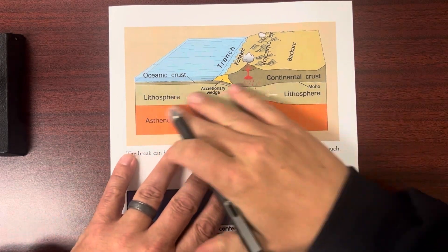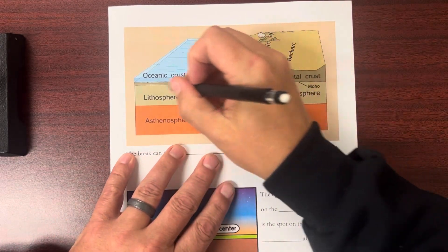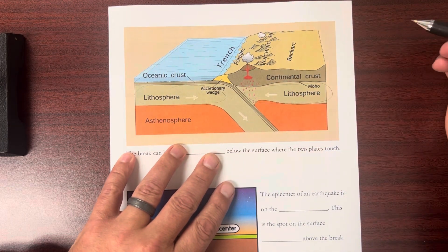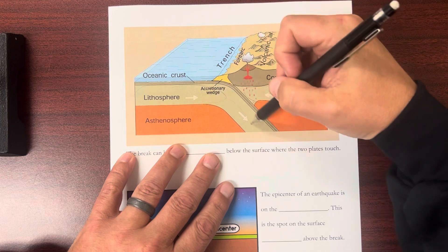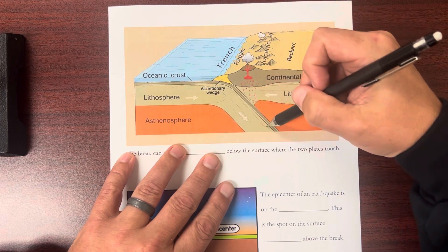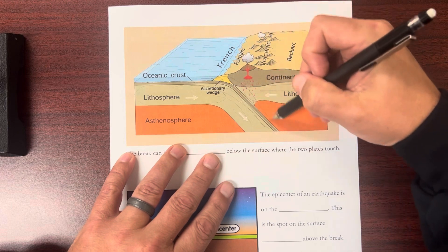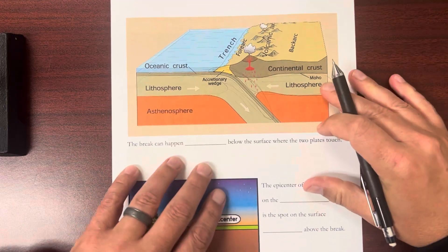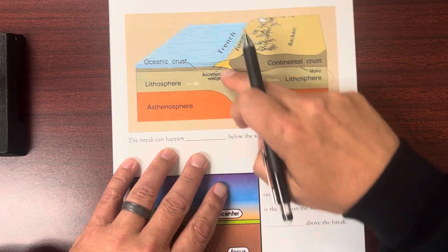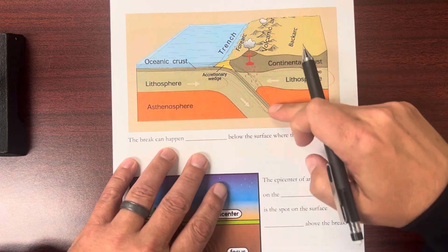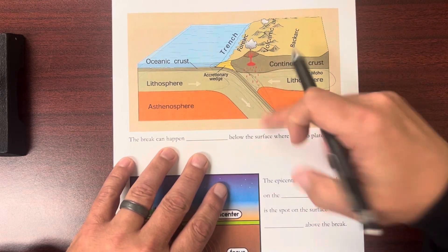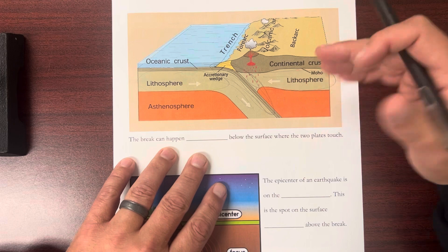Now we're seeing a side view of two pieces of crust. Here is one plate. And here is another plate. One of these is actually going underneath the other. So all along here is where they're touching. And the break can happen anywhere below the surface where the two plates touch. So you could get a break at any point along here and get an earthquake that happens.